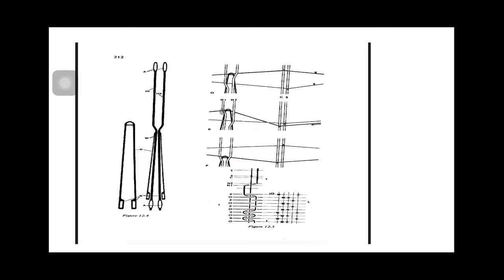In diagram X, the crossed shed forms on the left side of the standard end. Heel frame C, which controls the crossing end, is lifted in the open shed, and heel frame S controlling the standard end is in the bottom position. In the crossed shed position, heel frames C and S are both in the bottom position, while H1 is lifted to form the crossed shed. This transfer of the crossing end to the left side is assisted by the simultaneous operation of the easer to provide the extra yarn length needed to compensate for the crossover.